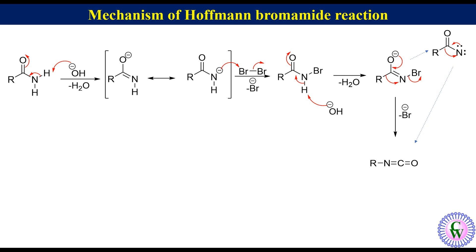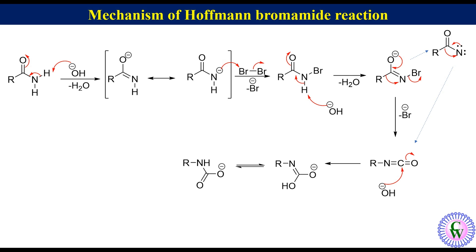The isocyanate carbon is highly electrophilic in nature. Hydroxide also acts as a nucleophile, so addition of hydroxide ion to the electrophilic carbon of isocyanate gives a carbamide, which has one more tautomeric form.